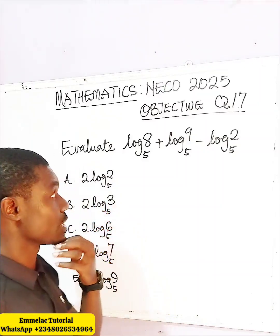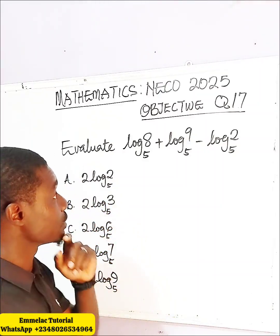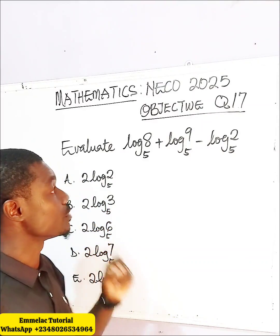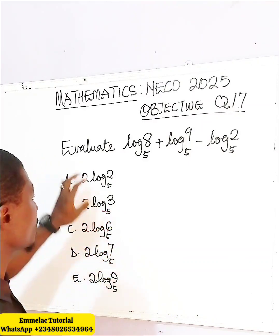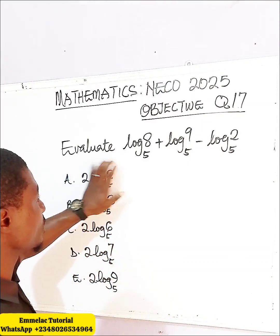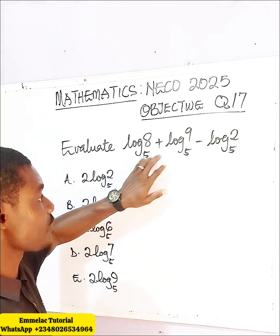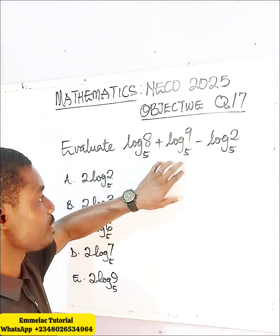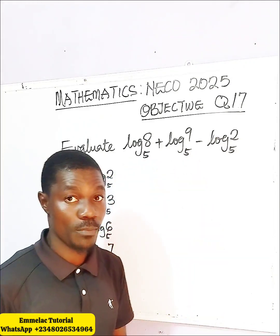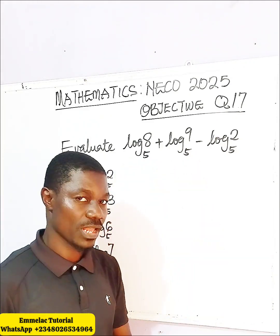Welcome to your MilaConline tutorial. Here is question 17 of NECO 2025 objective question. Evaluate log base 5 of 8, plus log base 5 of 9, minus log base 5 of 2.